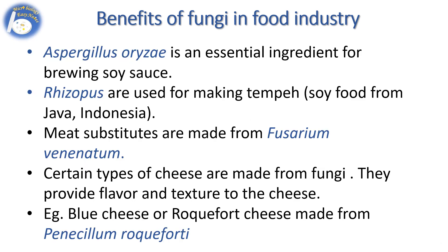Aspergillus or Rhizopus is an essential ingredient for brewing soya sauce. Rhizopus is used for making tempeh, which is a soya food from Java, Indonesia. Meat substitutes are made from Fusarium venenatum fungi. Certain types of cheese are made from fungi, which provide flavor and texture. For example, blue cheese or Roquefort cheese is made from Penicillium roqueforti.